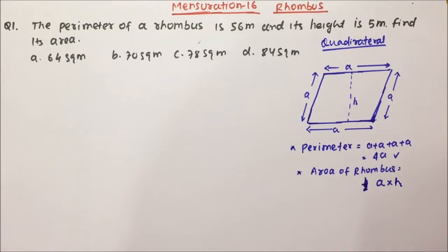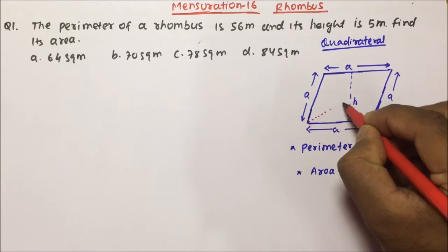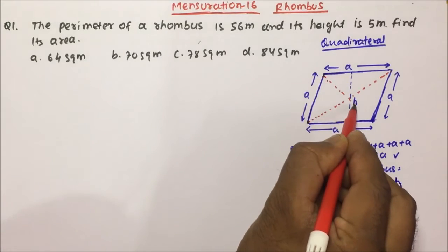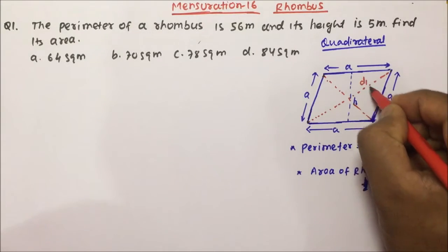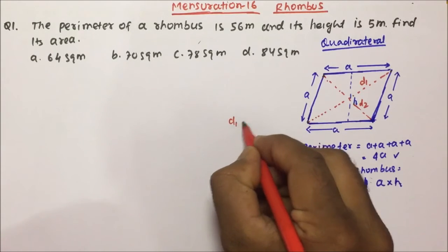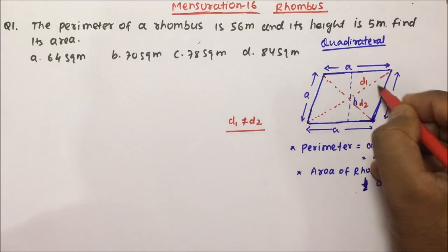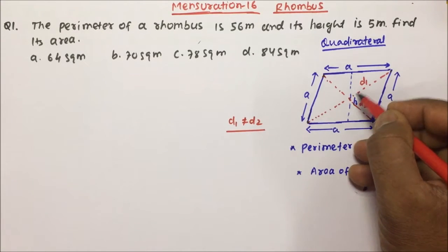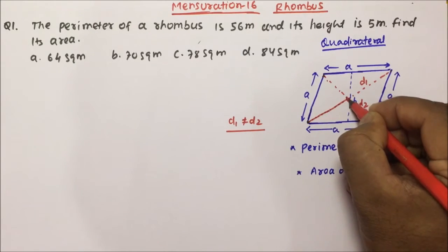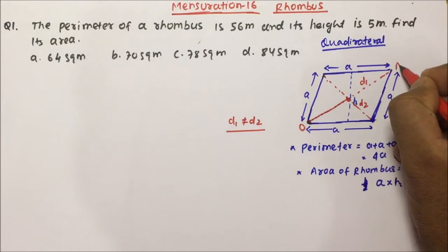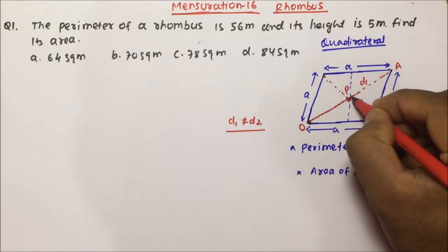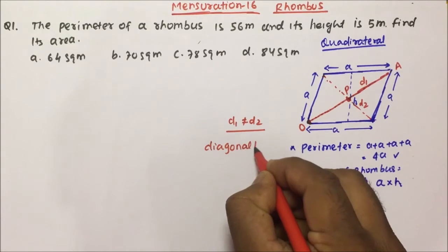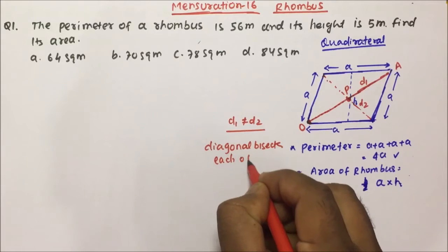Now let us understand the diagonals of a rhombus. This is one diagonal and this is another diagonal. Suppose this is d1 and this is d2. You can clearly see d1 is not equal to d2. Also, d1 and d2 bisect each other — meaning if this point is O, and the vertices are A, B, C, D, the diagonals bisect each other at O.